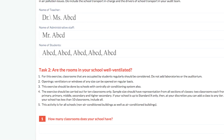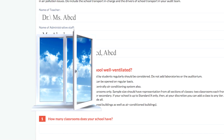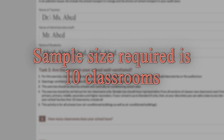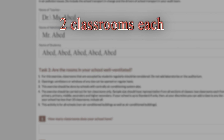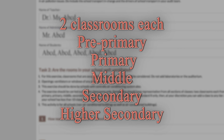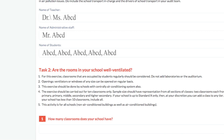By openings, we mean windows and ventilators that can be opened on a regular basis. The sample size required is 10 classrooms — two classrooms each from pre-primary, primary, middle, secondary, and higher secondary. If your school is up to standard 10th, then you can add a classroom from any tier.